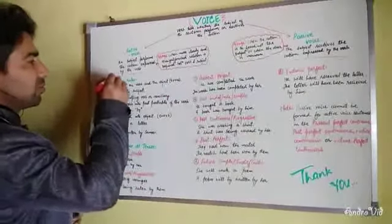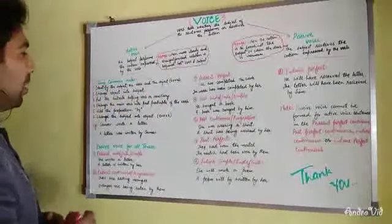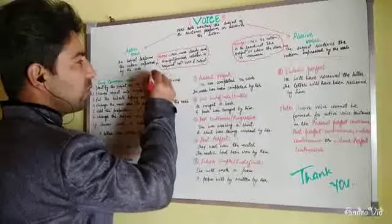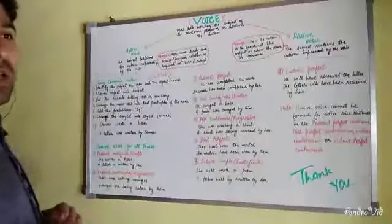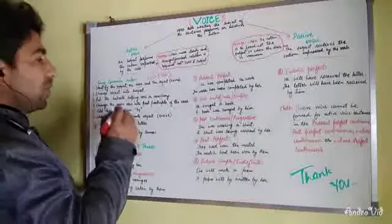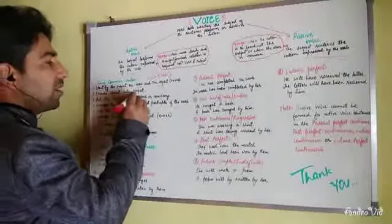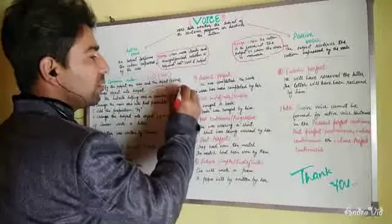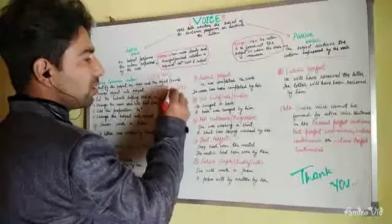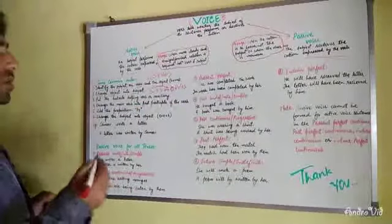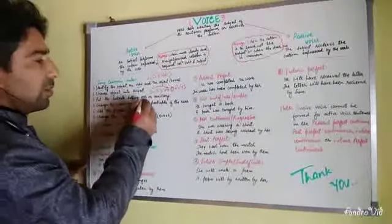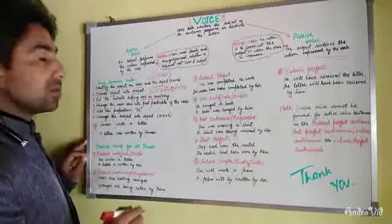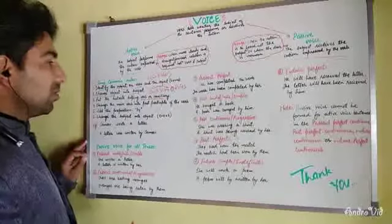Now some of the basic rules we use. First, we have to identify the subject, the verb, and the object, because the basic formation of a sentence is S + V + O — subject plus verb plus object. We have to figure out in the active voice sentence what is the subject, what is the verb, and what is the object. Then you have to change the object into subject position, giving us O + V + S in passive. Add the suitable helping verb or auxiliary, including modals, in all cases.